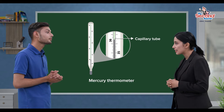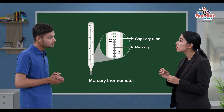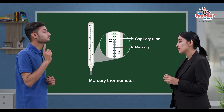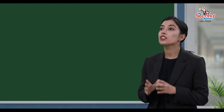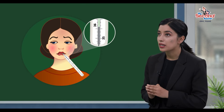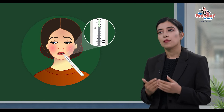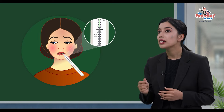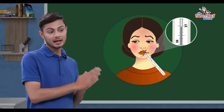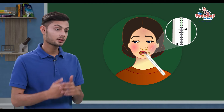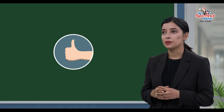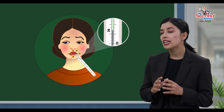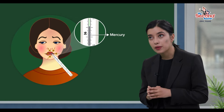Exactly. The capillary tube contains liquid mercury. When the thermometer is placed in contact with our body, our body heat transfers to the liquid mercury.